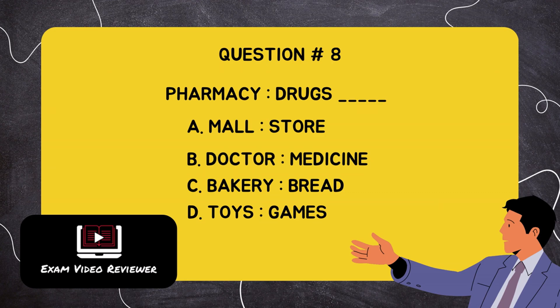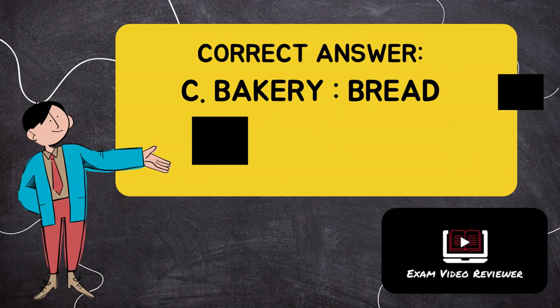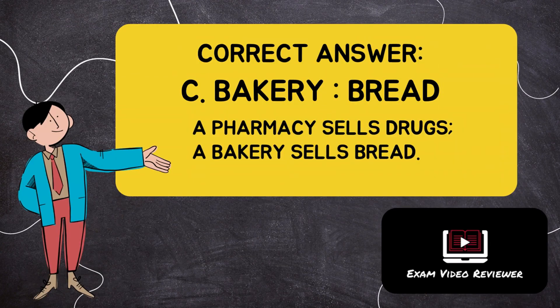Question number eight: pharmacy is to drugs as blank. Letter A: mall is to store, Letter B: doctor is to medicine, Letter C: bakery is to bread, Letter D: toys is to games. The correct answer is Letter C, bakery is to bread. A pharmacy sells drugs; a bakery sells bread.